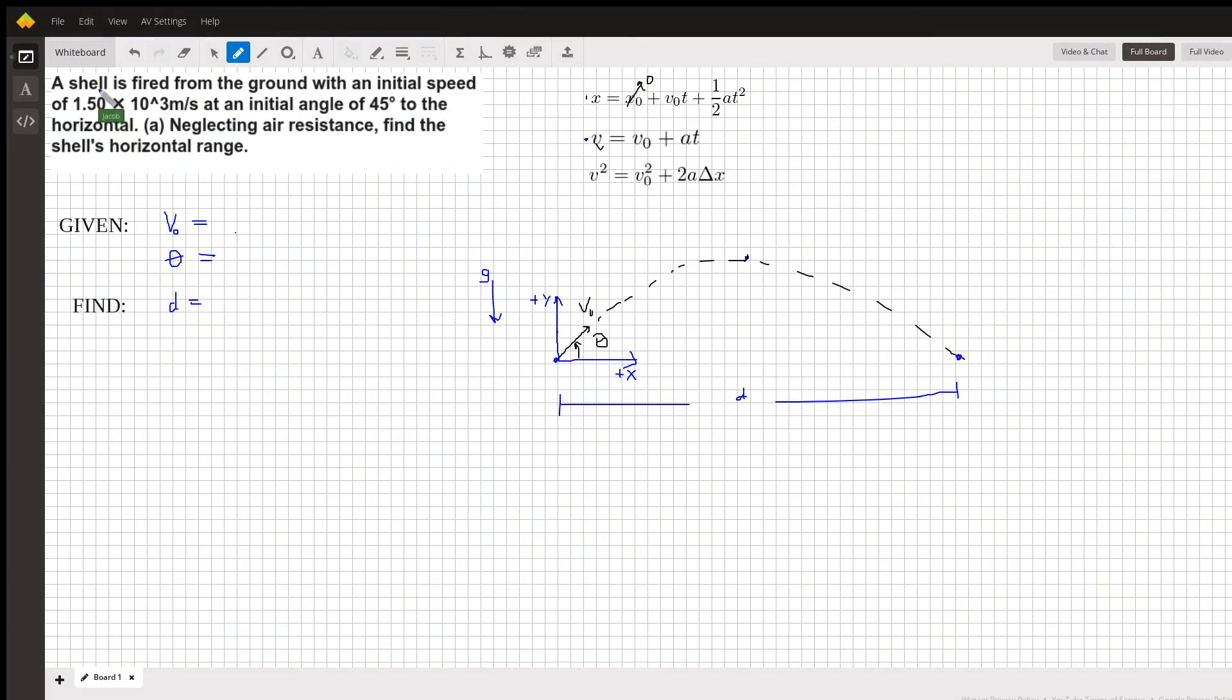Hey guys, I have a projectile motion problem. The problem statement is: a shell is fired from the ground with an initial speed of 1.5 times 10 to the third meters per second and an initial angle of 45 degrees to the horizontal. We need to neglect air resistance and find the horizontal range.